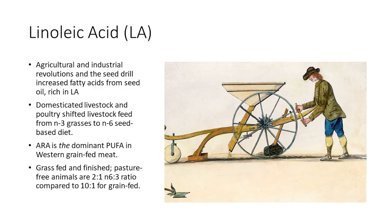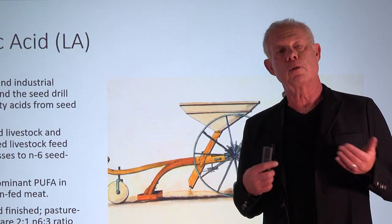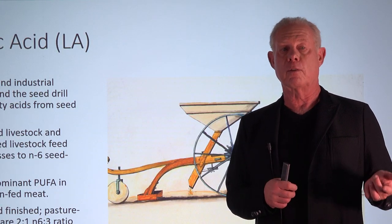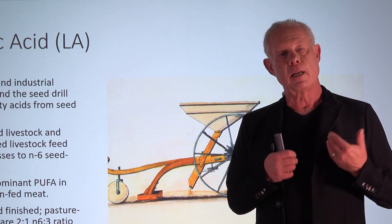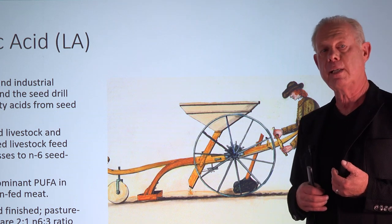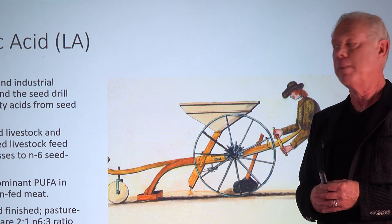The agricultural and industrial revolutions led us to make more oils and plant more grains. Grains are a very good source of omega-6, not so much of omega-3s, which we find more in grasses. We domesticated livestock, put them in barns, and fed them grains instead of their natural diet of grass. Because of that, their bodies switched from being primarily omega-3 to primarily omega-6.